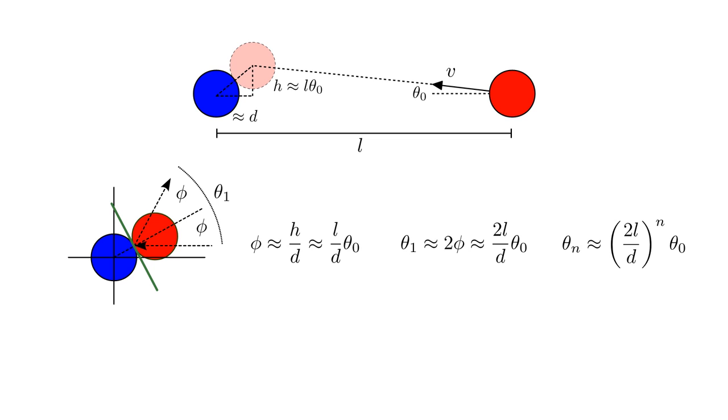The red ball will now travel at an angle theta-one. The next collision will amplify that by a factor of two L over d. After n collisions, it will travel at an angle theta-n equals two L over d to the n-th power times the initial angle theta-zero. The angle grows exponentially with the number of collisions.